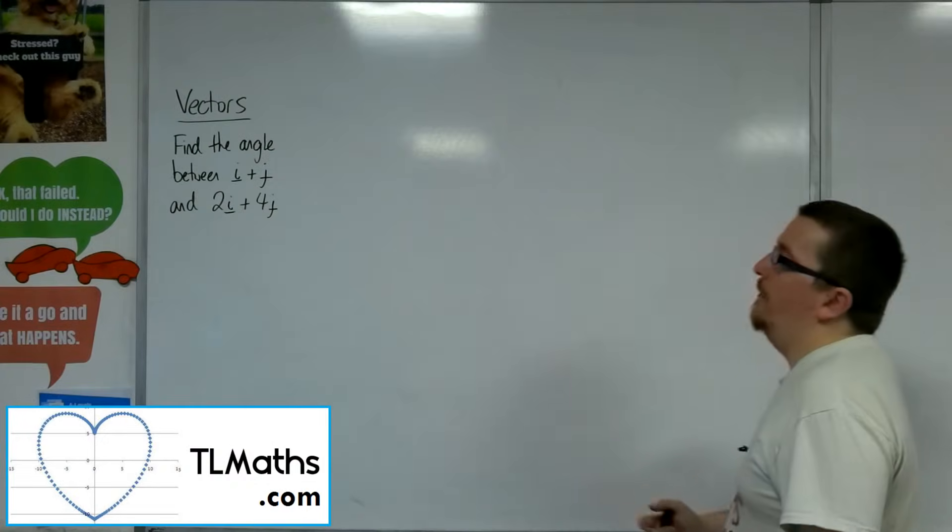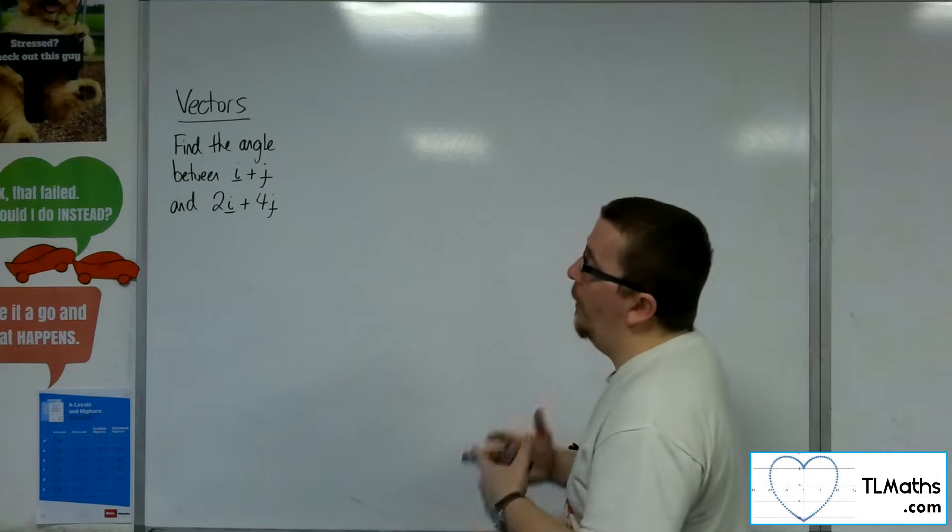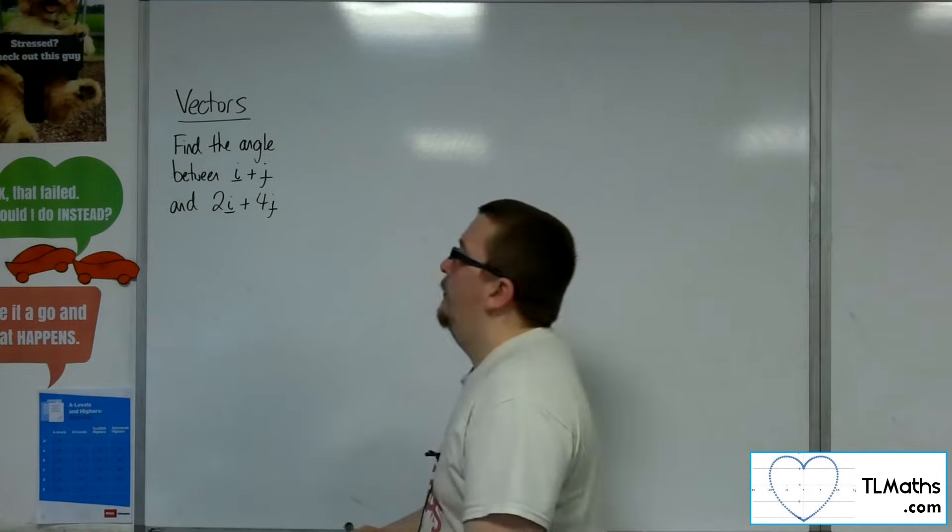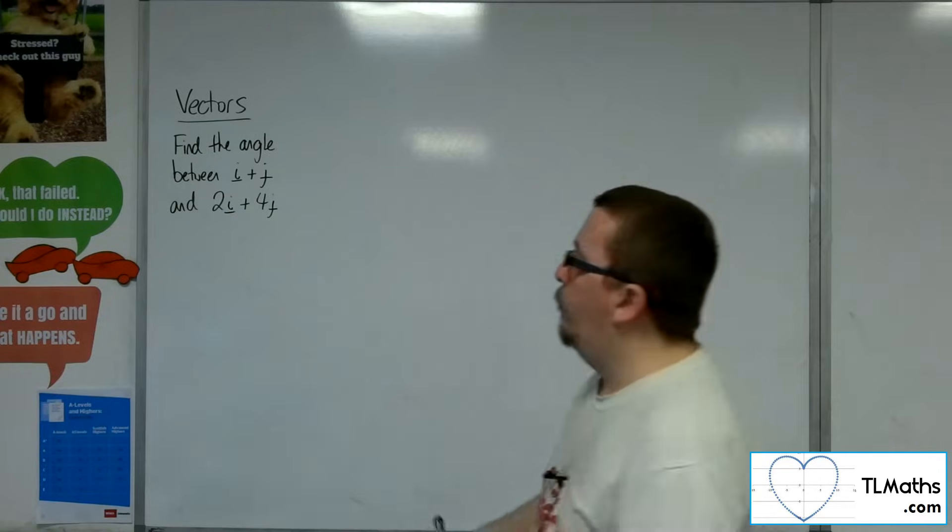So in this video, we're going to look at trying to find the angle between two vectors. In this case, we've got i plus j and 2i plus 4j. So let's draw a diagram first so we can visualize what's going on.